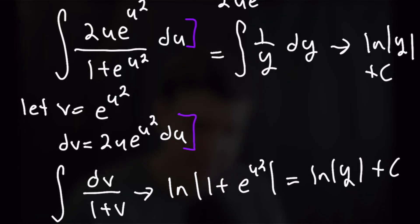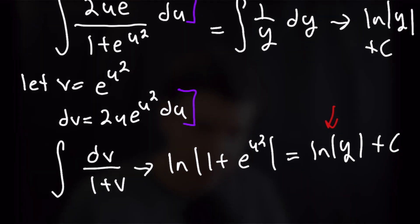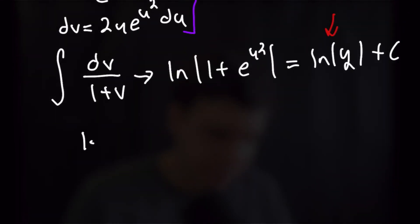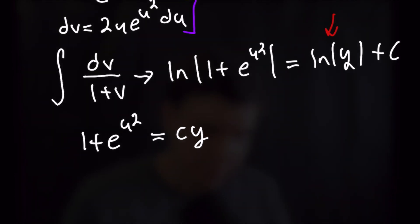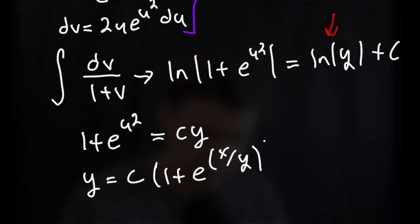Exponentiating both sides, the natural log and e cancel, leaving y, and we can write e to the power of c as a new constant. So we get 1 plus e to the u squared is equal to c times y. Solving for y and back-substituting, our final general solution is y is equal to some constant c times 1 plus e to the (x over y) squared. Let's move on to our fifth and final example.